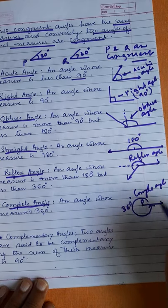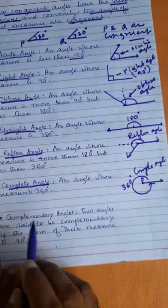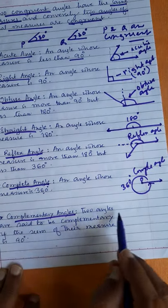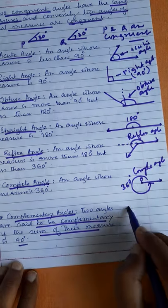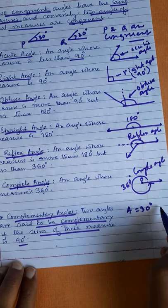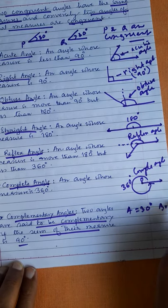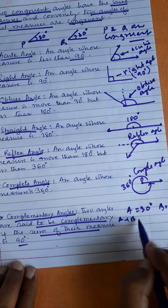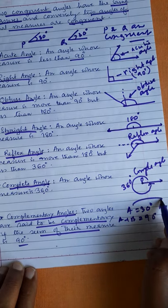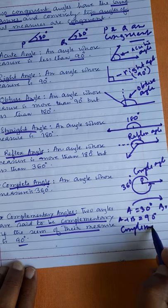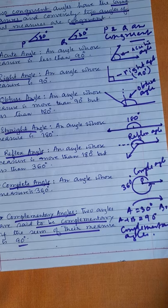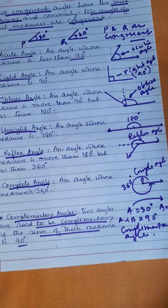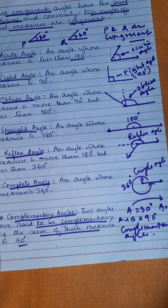Next is complementary angles. Two angles are said to be complementary to each other if their sum is 90 degrees. Suppose angle A is 30 degrees and angle B is 60 degrees — A plus B equals 90 degrees, so they are complementary. For example, the complementary angle of 20 degrees is 70 degrees, because 20 plus 70 is 90.